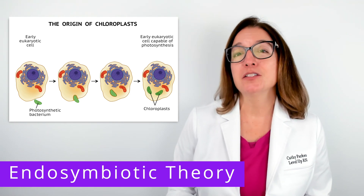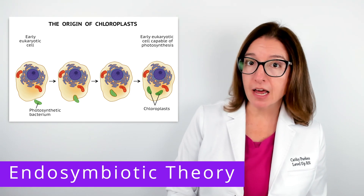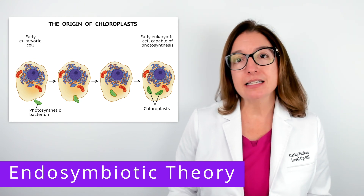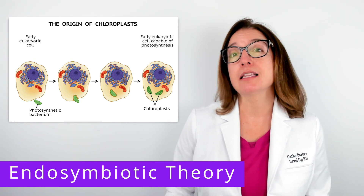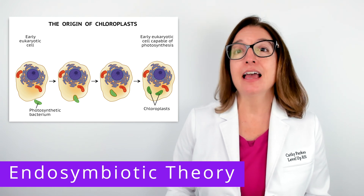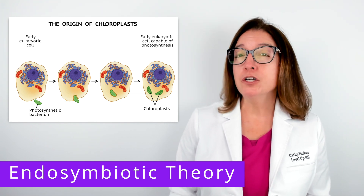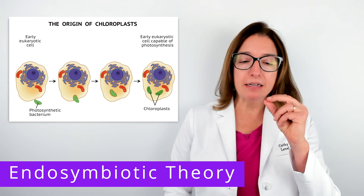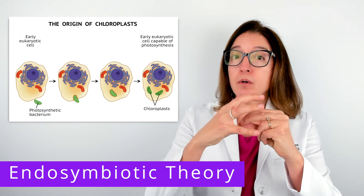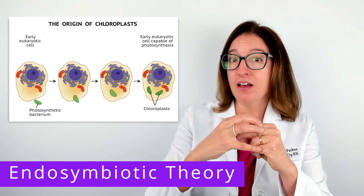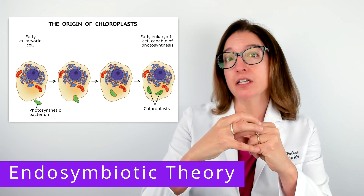This theory also applies to chloroplasts, which are organelles found in some eukaryotic cells, such as plant cells and algae cells. The chloroplast is where photosynthesis occurs. The endosymbiotic theory states that this organelle originally arose when a bacterium capable of photosynthesis was taken into a eukaryotic cell via phagocytosis and then remained in that cell as an intracellular component.